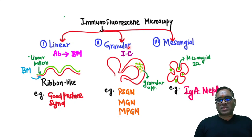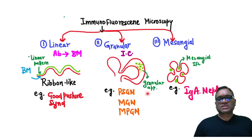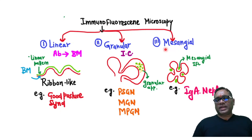Granular pattern — you are going to see it is because of immune complex, and that will be showing you green heterogeneous granular appearance, which will be seen in PSGN, membranous glomerulonephropathy, and MPGN.